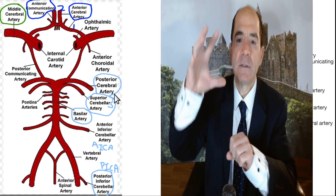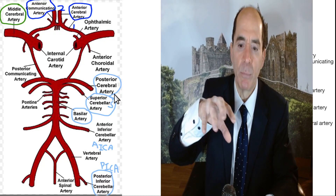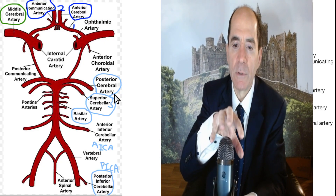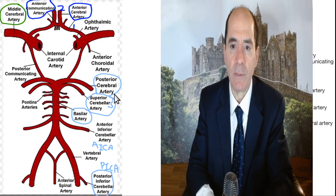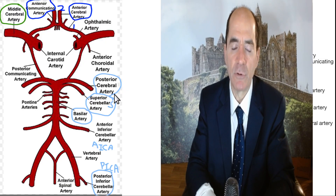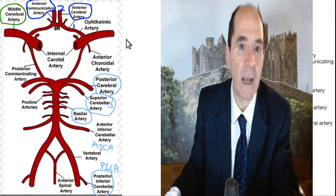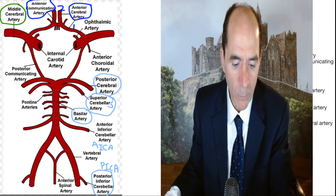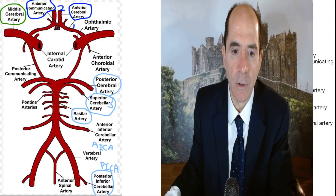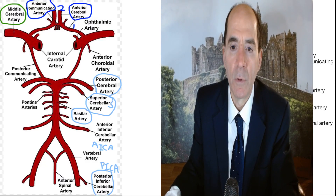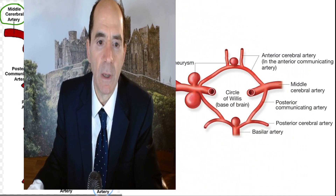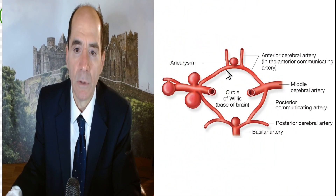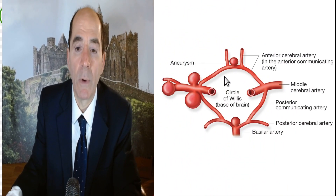The key point is that these arteries are on the outside of the brain — like if my microphone was the brain, the arteries are all outside of it. Then there are little tiny penetrating branches that go into the parenchyma of the brain. The reason we care about the names of the arteries is that we have to describe disease in them: atherosclerotic narrowing, stenosis, or aneurysm.